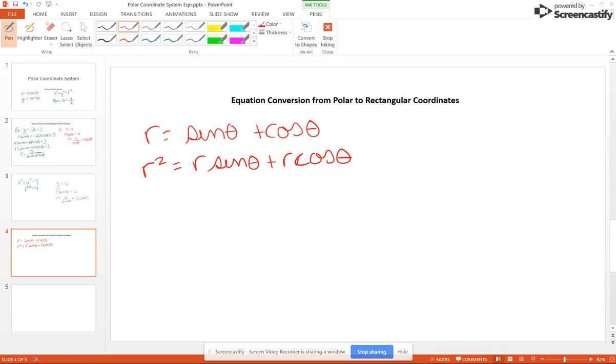Multiply each term by R – well, R squared is X squared plus Y squared, R sine theta is Y, R cosine theta is X. It's kind of up to your instructor how far you go at this point. I would leave this alone.